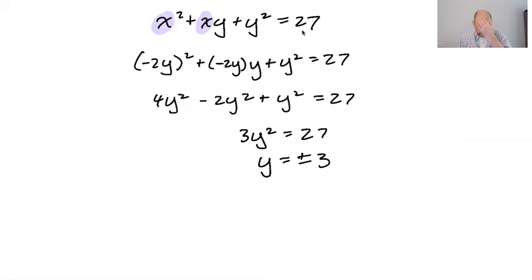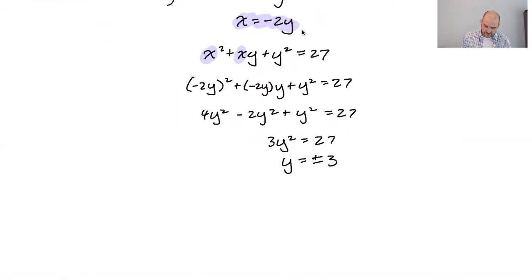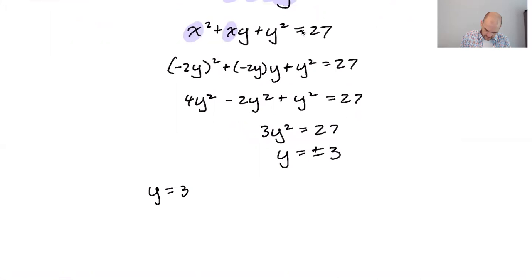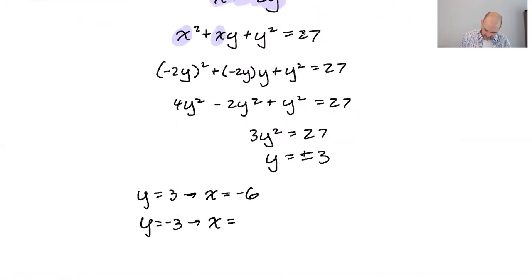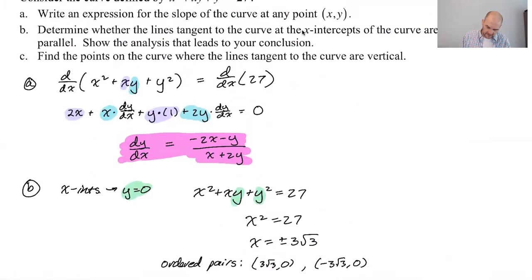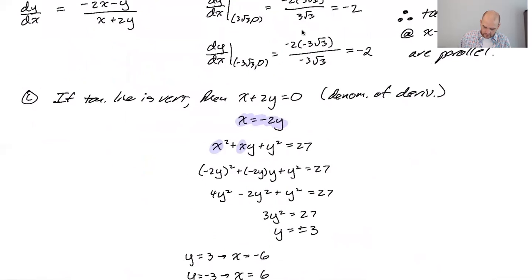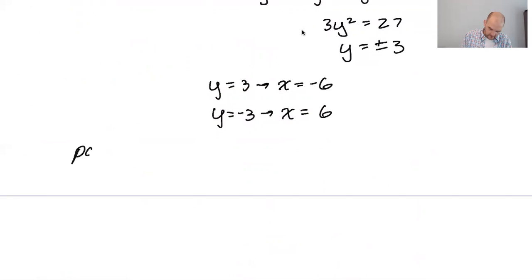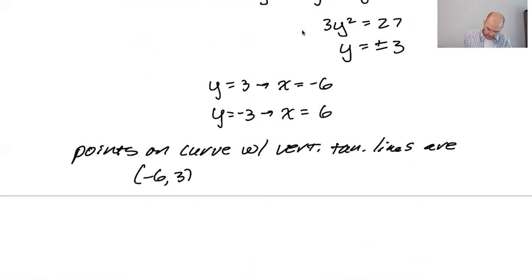Getting plus or minus 3 for y, and then x is equal to negative 2y. So if y equals 3, x is negative 2 times that, so negative 6. If y equals negative 3, x is negative 2 times that, which is positive 6. So what are we looking for? I found the ordered pairs and the points on the curve where the tangent lines are vertical. So points on curve with vertical tangent lines are, and we'll write them as ordered pairs: (-6, 3) and (6, -3). And there we go.